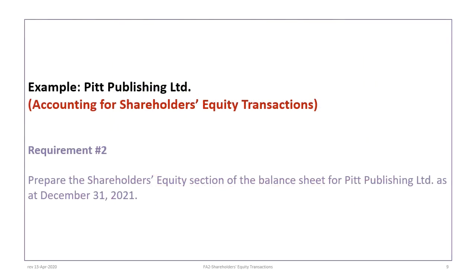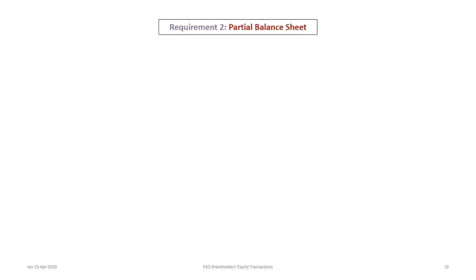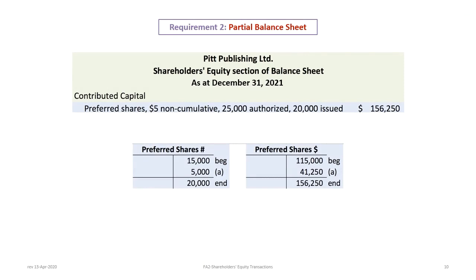The second requirement is to prepare the shareholders' equity section of the balance sheet for Pitt Publishing. A partial balance sheet in good form includes the company name, the shareholders' equity section, and the date as at December 31st. The first section is contributed capital. Preferred shares come first: $5, non-cumulative, 25,000 authorized, and 20,000 issued — these are all necessary disclosures.